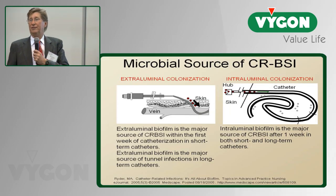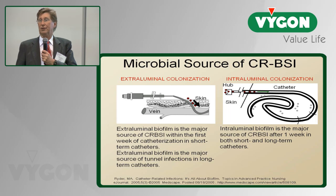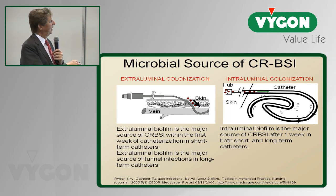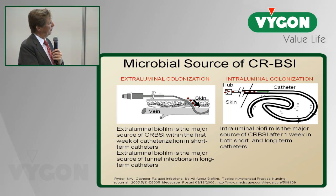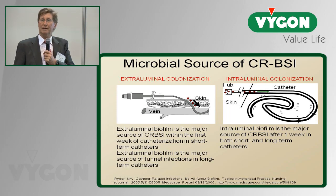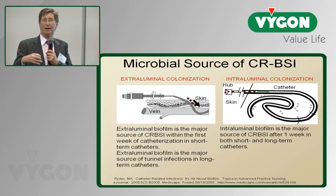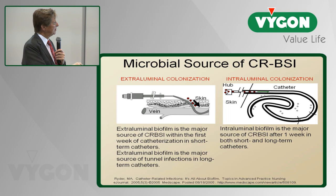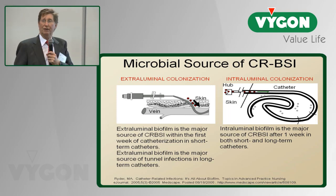It's important to understand the pathophysiology of how bloodstream infections occur in our patients. They really fall into two categories. When you first insert that catheter through the skin, you can pick up organisms that are sitting on the skin. They attach to the outside or external surface of the catheter, produce an exopolysaccharide or biofilm, and then lead to infections. This is the pathogenic mechanism early after catheterization.